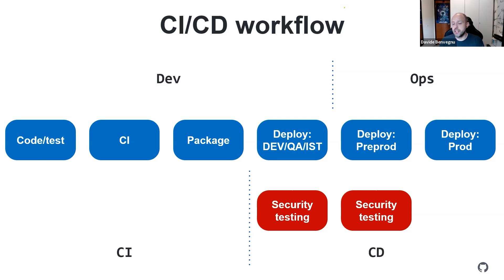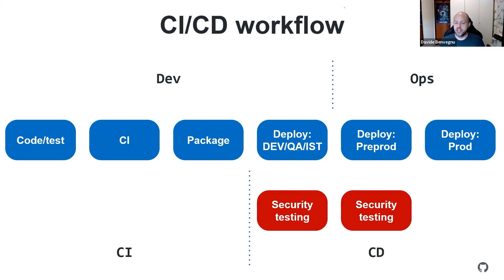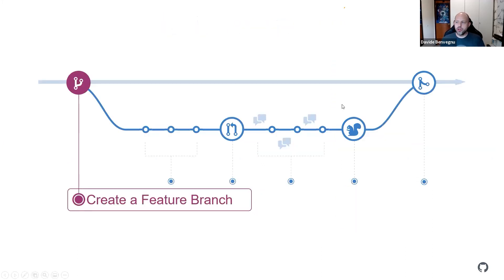Then the CD part — continuous deployment or continuous delivery — covers the deployment of your application in the different environments, implementing more security testing pointed at the application itself rather than the code. So how do we do CI/CD in GitHub and how do we advocate to use these processes?